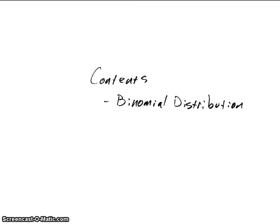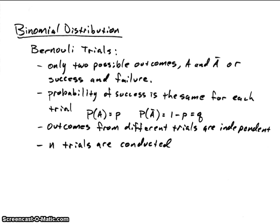In this video, we're going to look at the binomial distribution. To first start looking at the binomial distribution, we first have to look at what are called Bernoulli trials. Bernoulli trials are experiments that have the following properties. The first one is that there are only two possible outcomes, and we usually refer to them as success and failure.